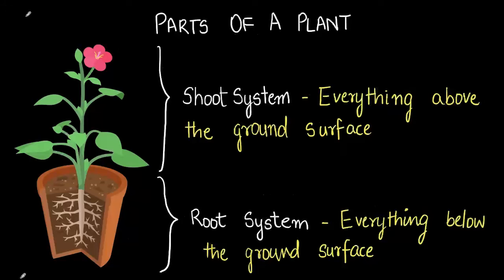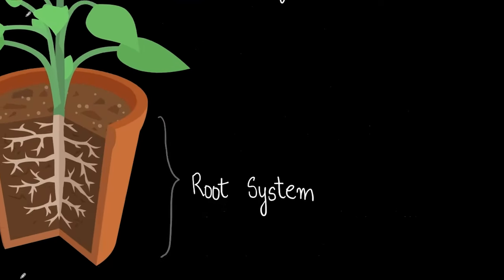So let's remind ourselves. We've gone through the shoot system — we've discussed the stem, the leaves, the flowers, and the fruits. Now let's dive into the root system.